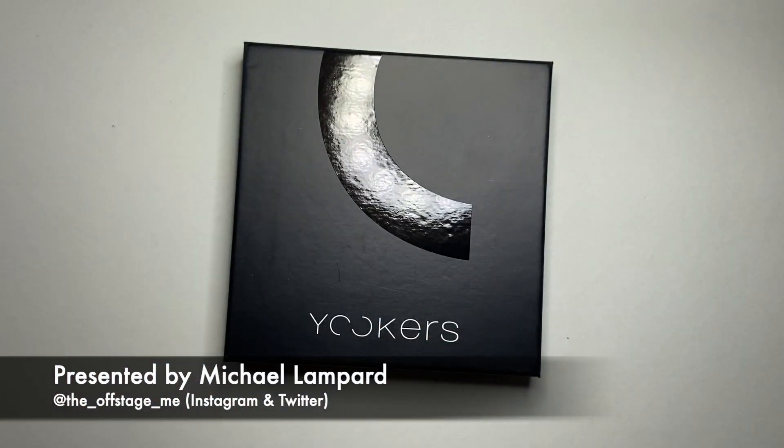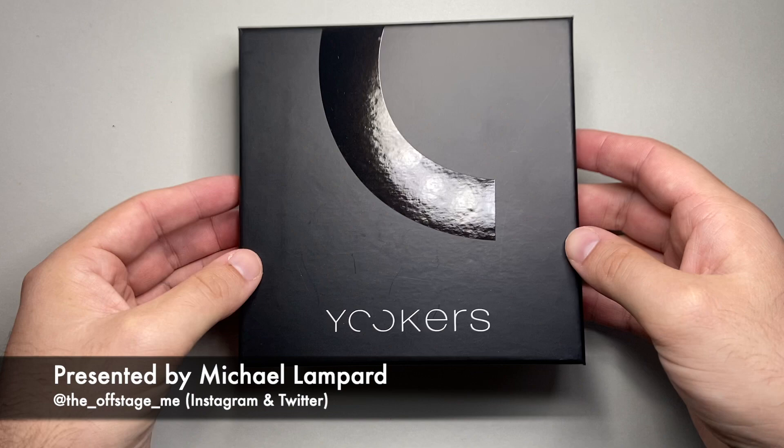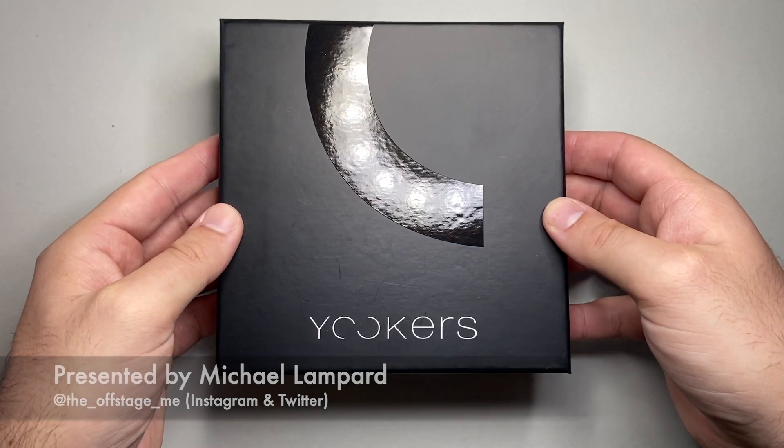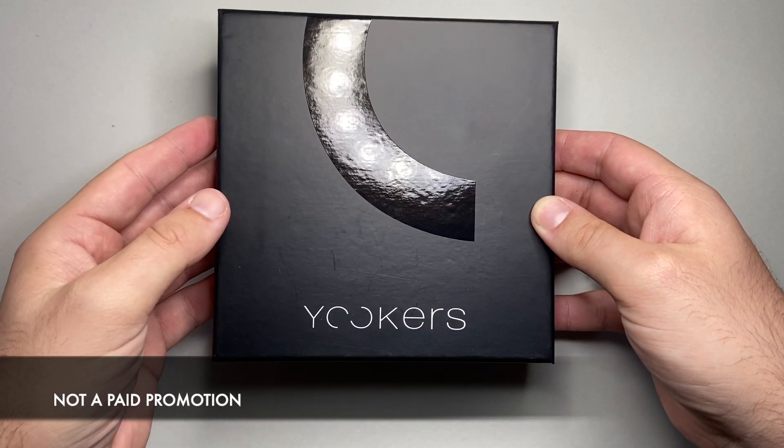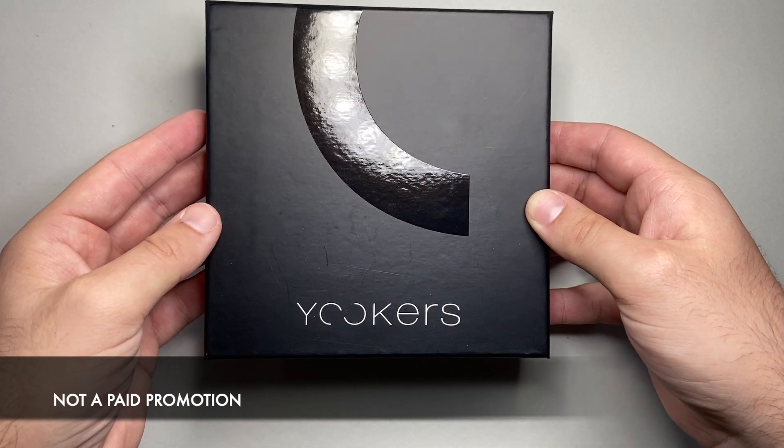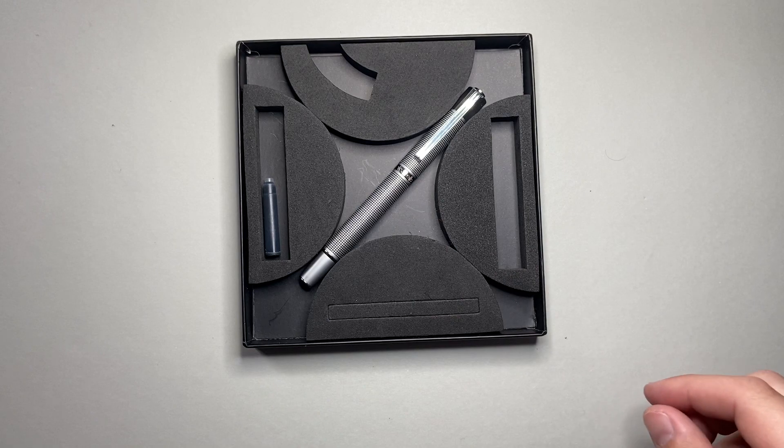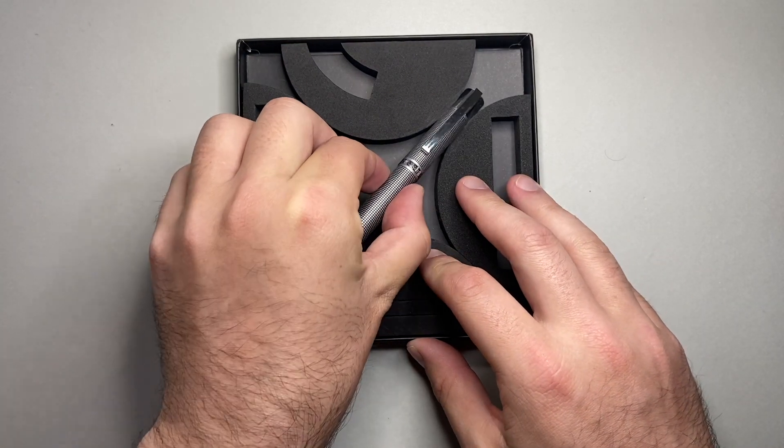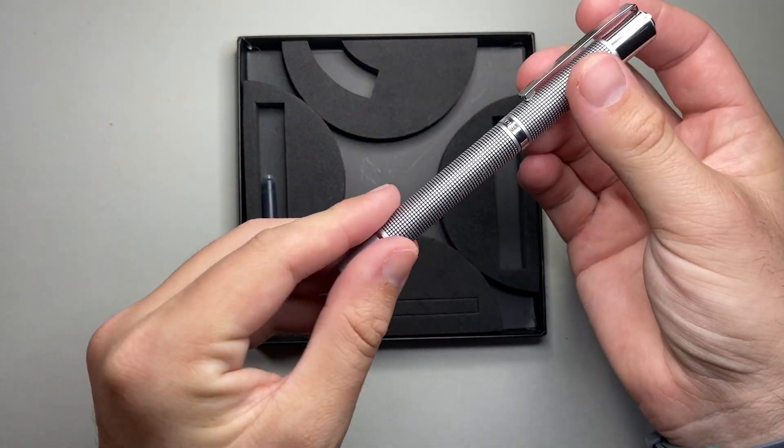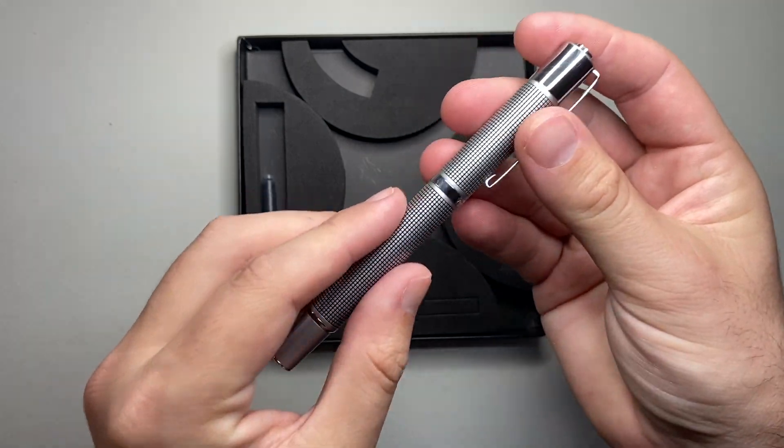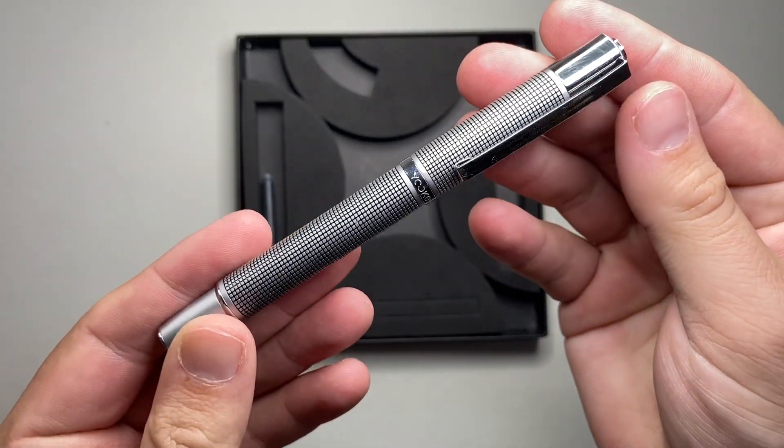Obviously this is the cardboard sleeve the box comes in, and then we have the very nice box with Yookas written there. I'm assuming it's pronounced Yookas, I'm not really sure. Nice sturdy cardboard, we open it up and we see the pen. This is called the Metis Felt Tip Pen in the black grid finish.